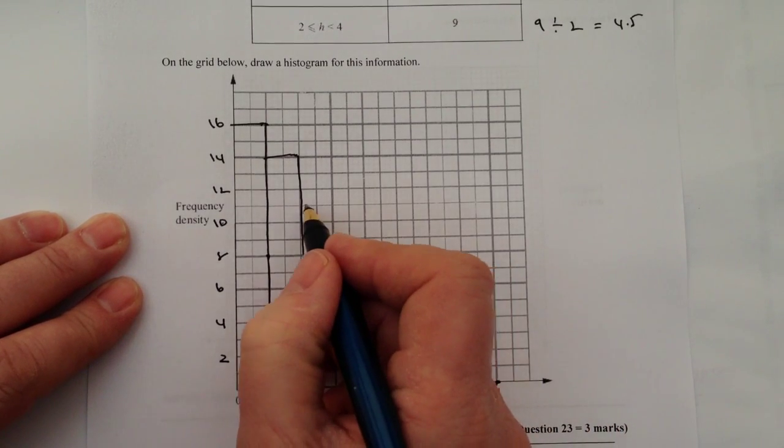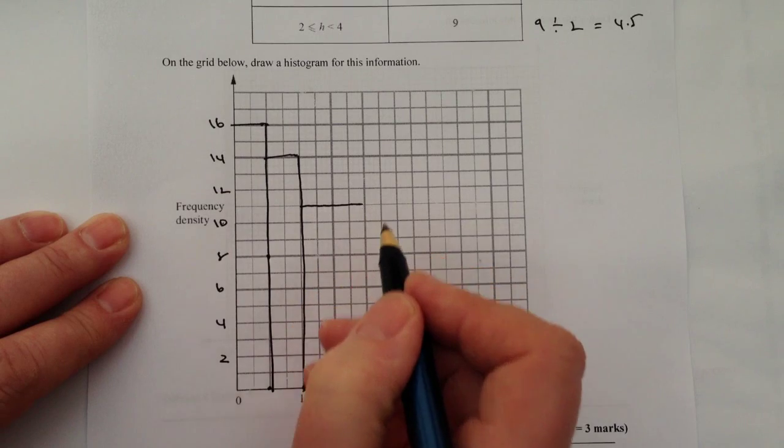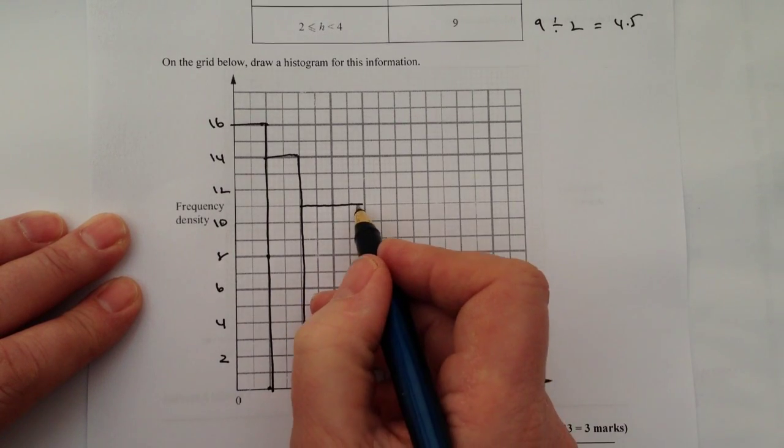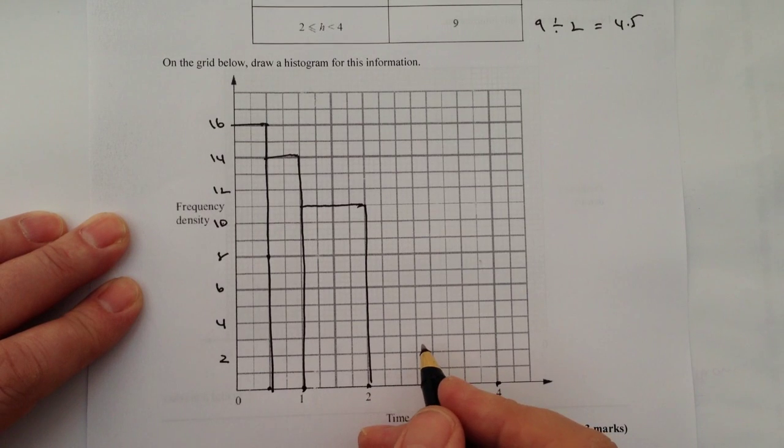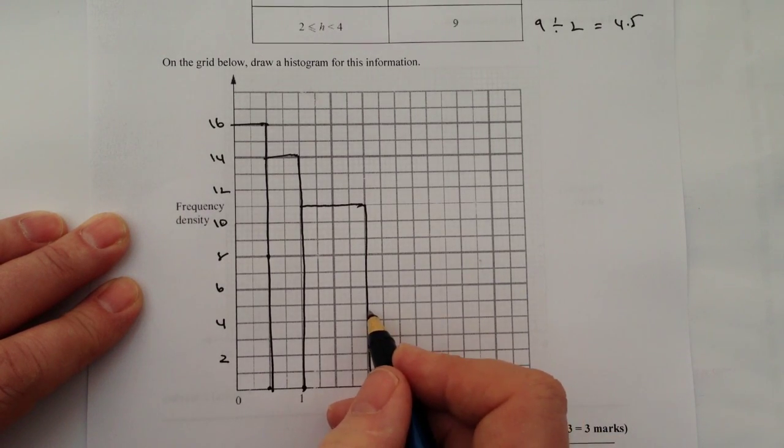But what you'll find when you finish plotting this is you'll get something that looks like this. And hopefully you'll be able to see from this that I've been able to plot something that looks like a histogram. And actually, this will give you then the completion of this particular question.